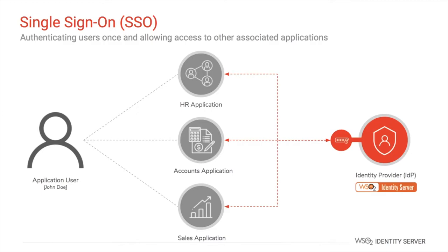With Single Sign-On, or SSO, users need not enter login credentials every time they log into each application. When a user tries to log into an application, the application redirects the user to the identity provider. The user provides login credentials to the identity provider and gets authenticated. After successful authentication, the identity provider sends the authenticated user information back to the application. When the same user tries to access the next application, the identity provider lets the user seamlessly access it without prompting for credentials again. There are standards such as SAML, OpenID Connect (OIDC), and WS-Federation that define these requests and responses.